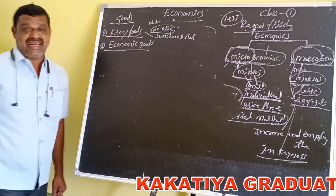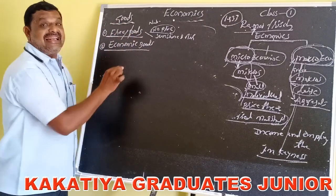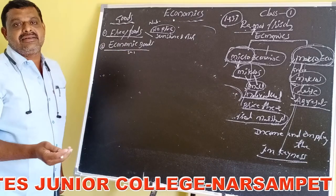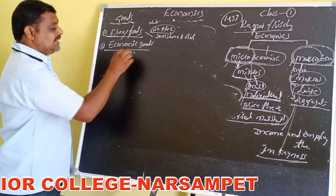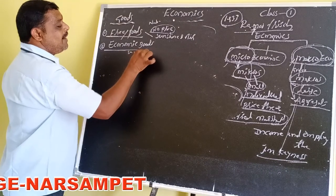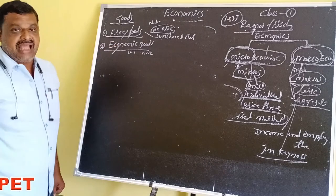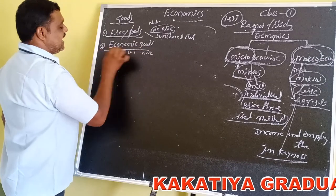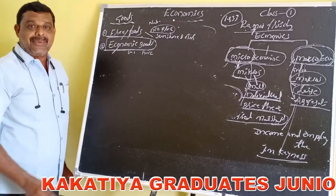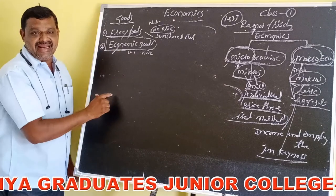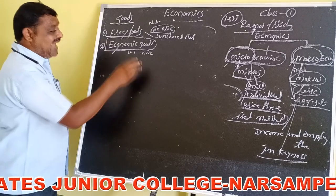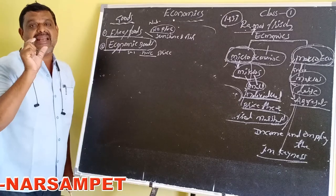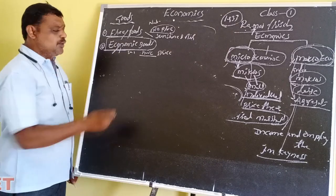Economic goods are goods whose supply is limited compared to demand, and therefore they have a price. Economic goods are mainly man-made goods — for example, pen, book, farm, etc.